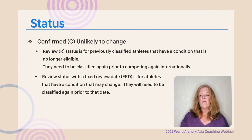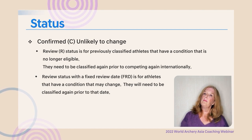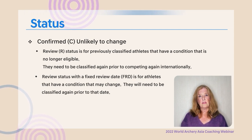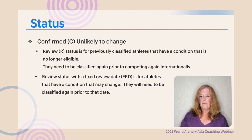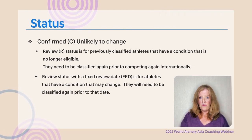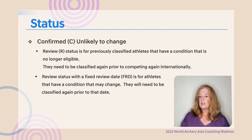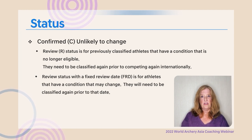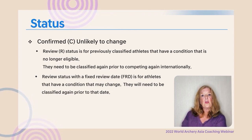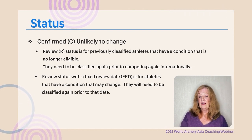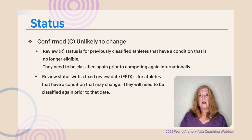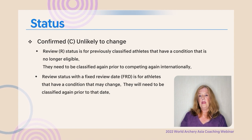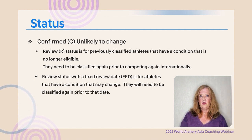Confirmed status means the condition is unlikely to change — for example, a spinal cord injury of over two years or an amputation. Review status is for previously classified athletes whose condition is no longer eligible, such as leg length deficiency, which used to be eligible but is no longer accepted, requiring reclassification. Additionally, if the International Paralympic Committee changes the Paralympic Classification Code, some athletes may need to be reclassified.